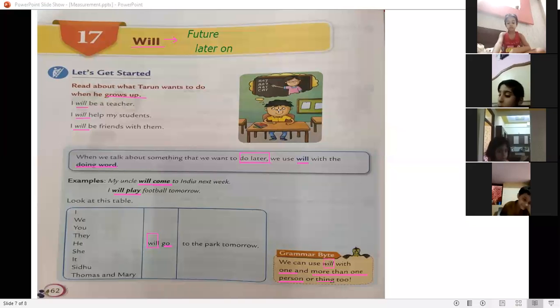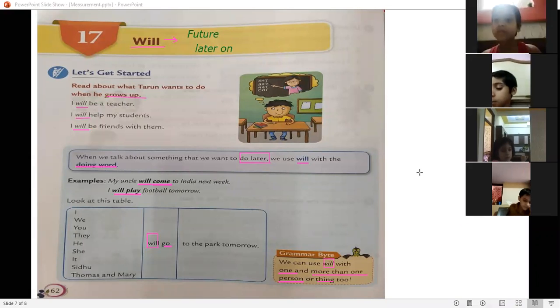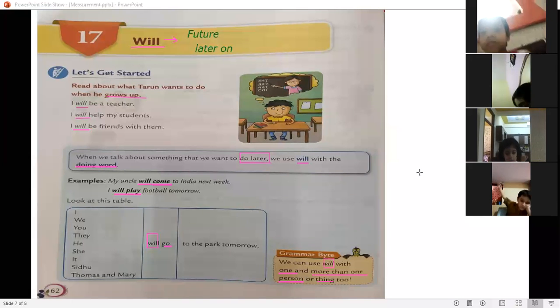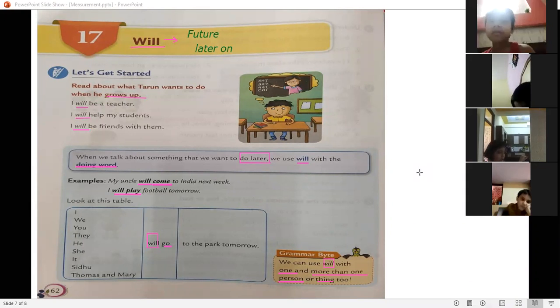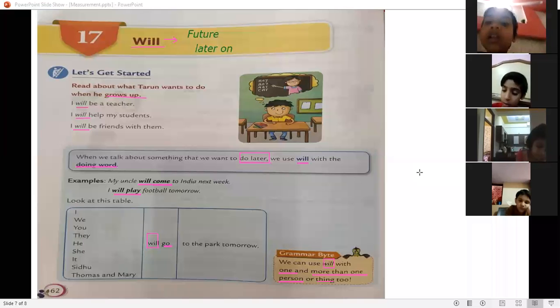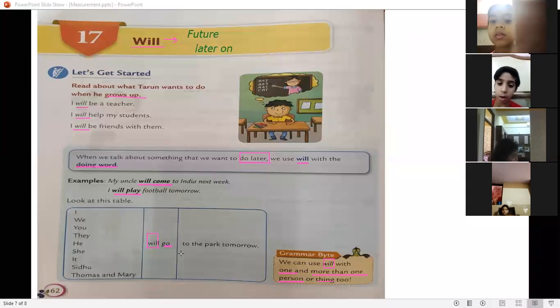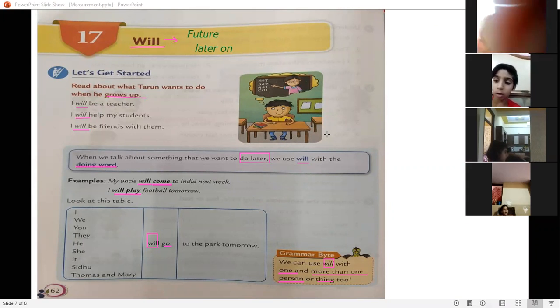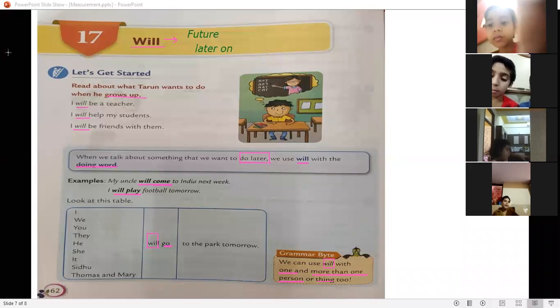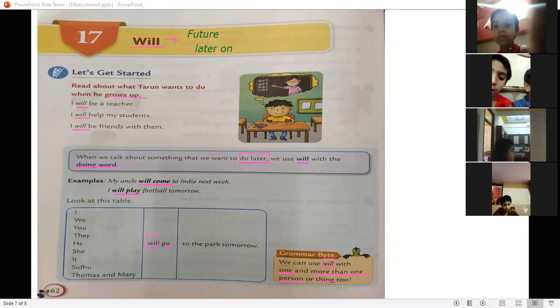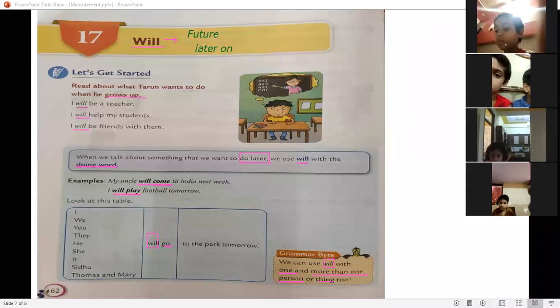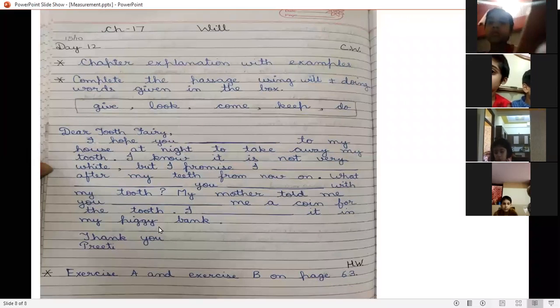Let us start. Ab aap sentence banao gae. Kaise banana hai aapko? I will go to the park. Drishti, repeat the sentence. We will play football tomorrow. Very good. I will play football tomorrow. Means, I will complete my homework in the evening. I will study in the evening. Okay. This is your classwork. This notebook exercise, we have to do in the classwork only. Yeh, we will do classwork mein karenge.